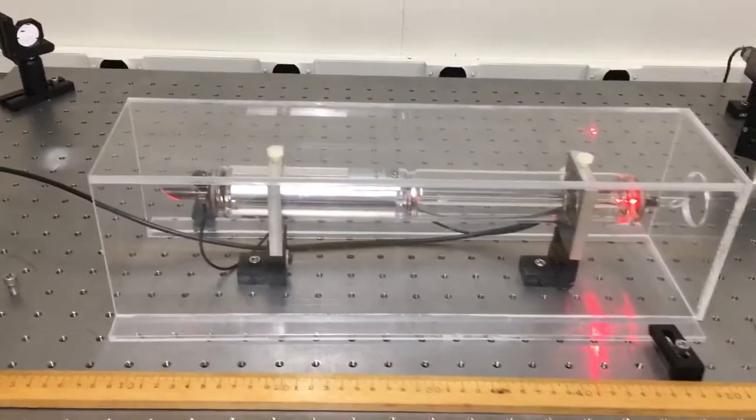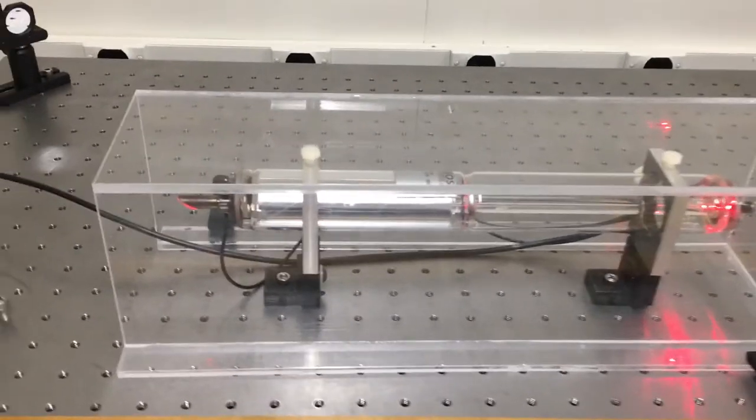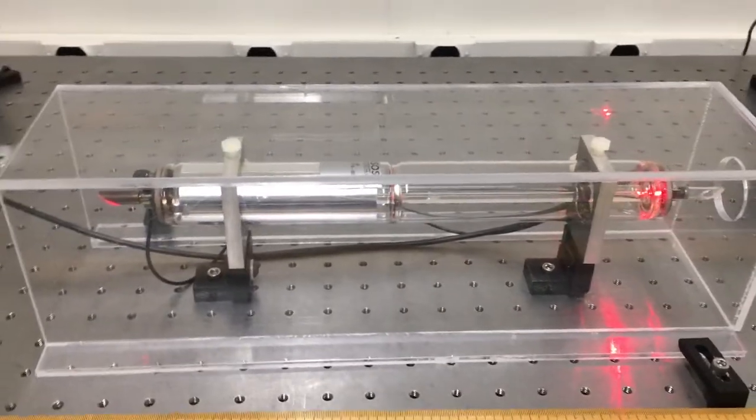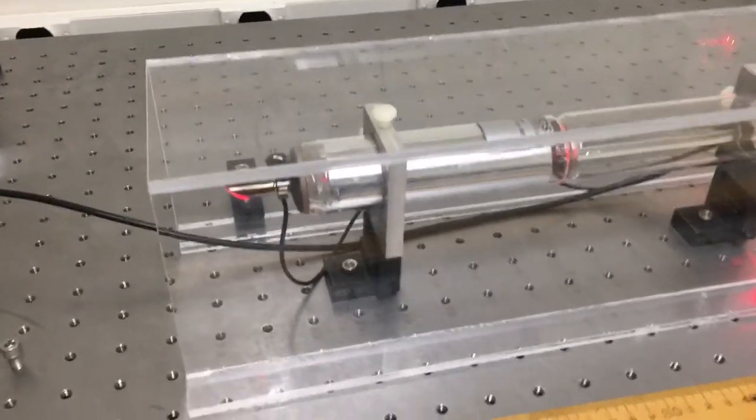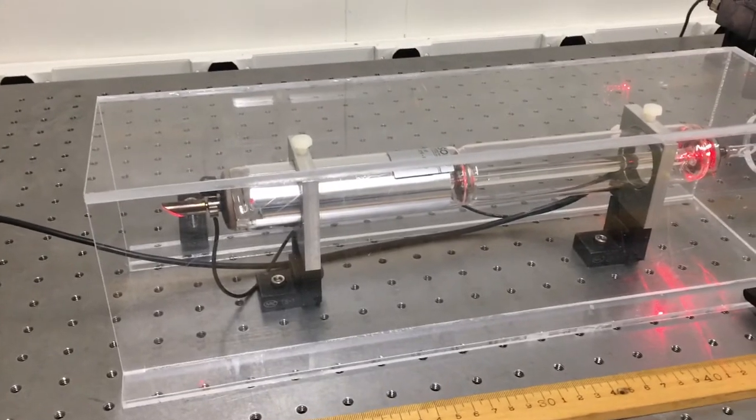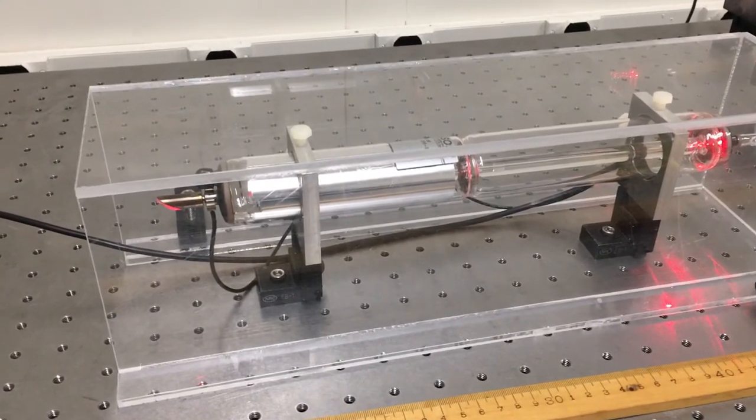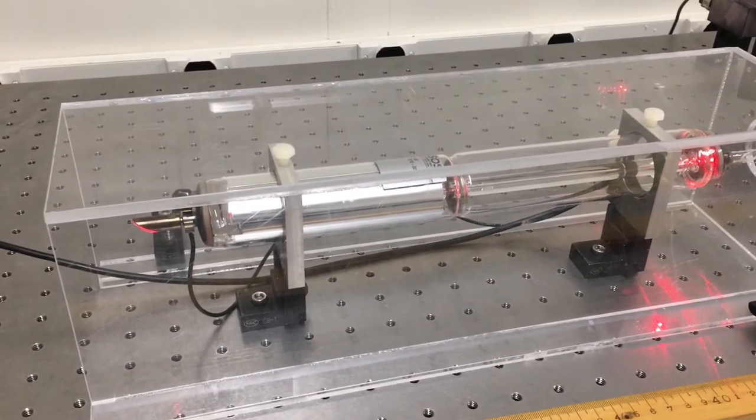The glass tube you see in front here is the laser tube. It contains a mixture of helium and neon gas, and in operation, an electric discharge pumps the neon atoms up to an excited state where they can participate in the lasing action.